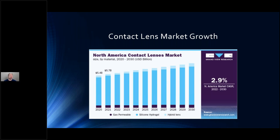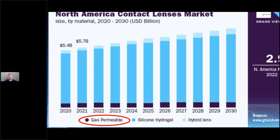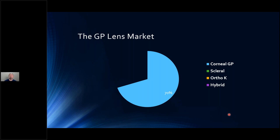If we look at the contact lens market, we know it's grown over the past few years and is expected to continue growing. But if we hone in on the gas perm market, you can see these blue boxes at the bottom showing there's not a lot of growth in GP lenses. Corneal GP lenses account for 70% of the entire GP lens market, sclerals for 14%, Ortho-K for 10%, and hybrids the remaining 6%. If the GP market in general is flat, that's not true of all segments.